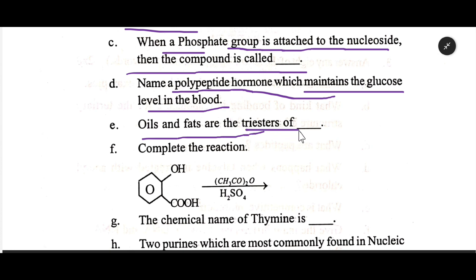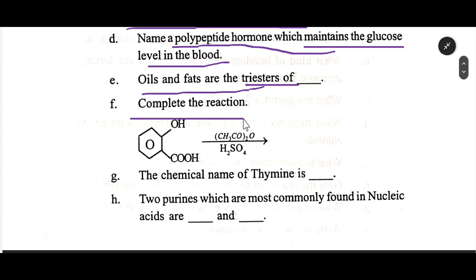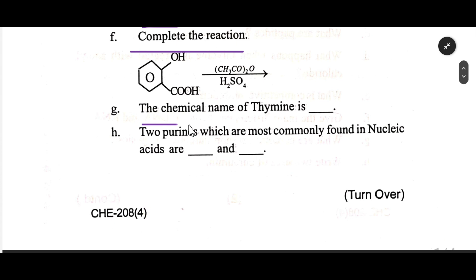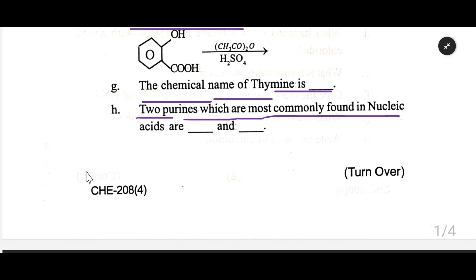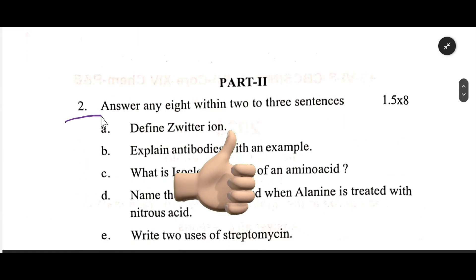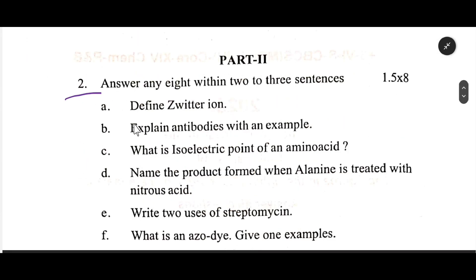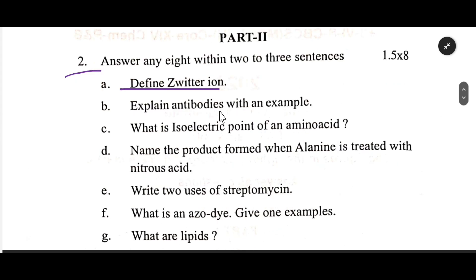Complete the reaction. The chemical name of thiamine is dash. The two purines most commonly found in nucleic acids are dash and dash. Number two: define zwitterion.